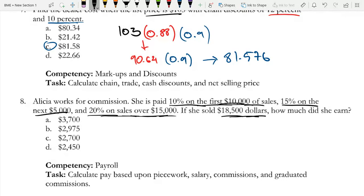So for the first $10,000, she earned 10%. So if we have a total of $18,500, and on the first $10,000 we had 10%, so she earned $1,000.